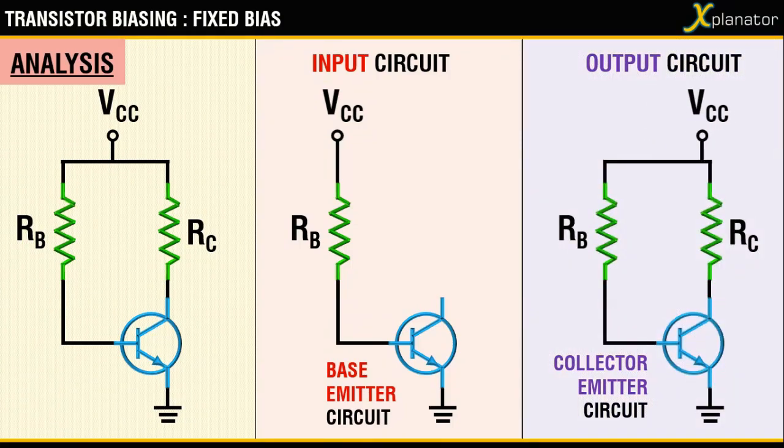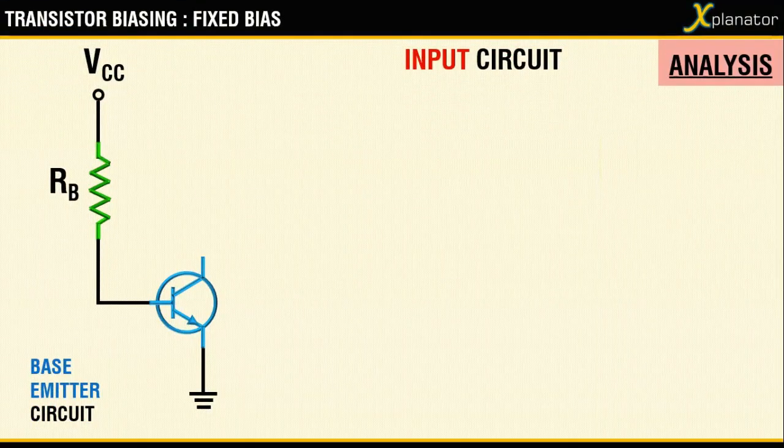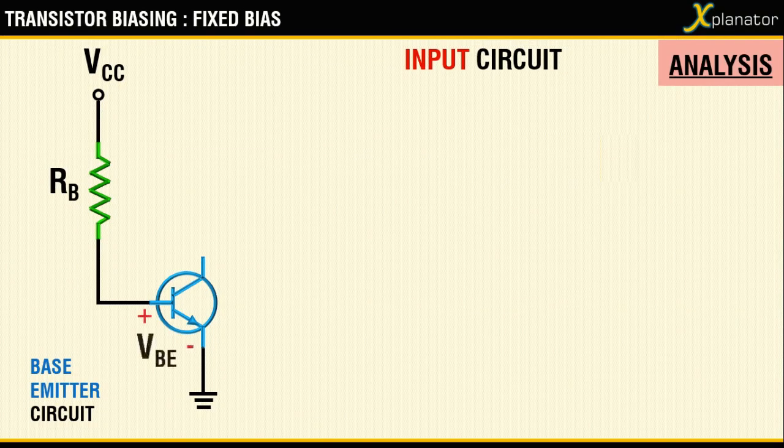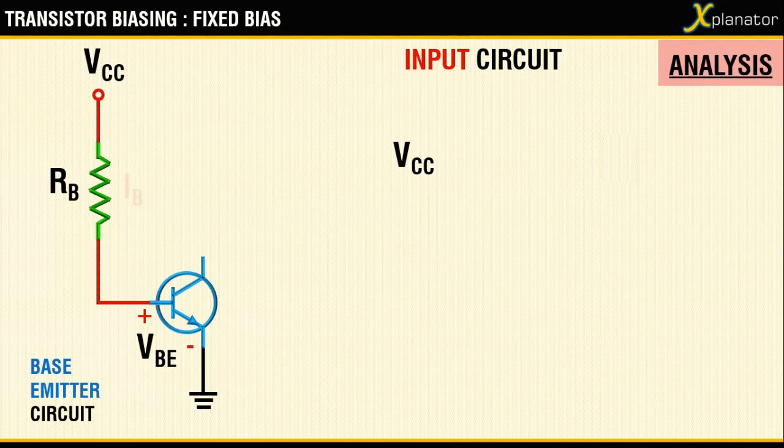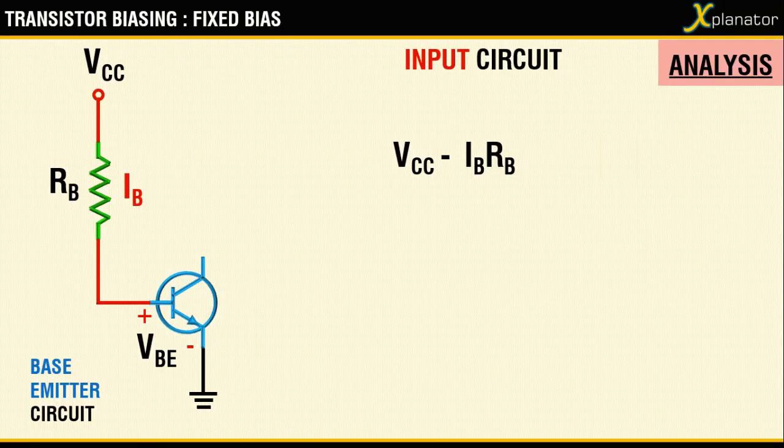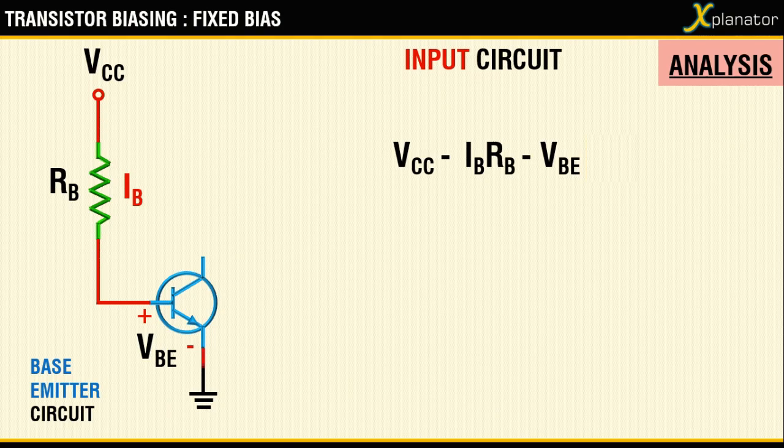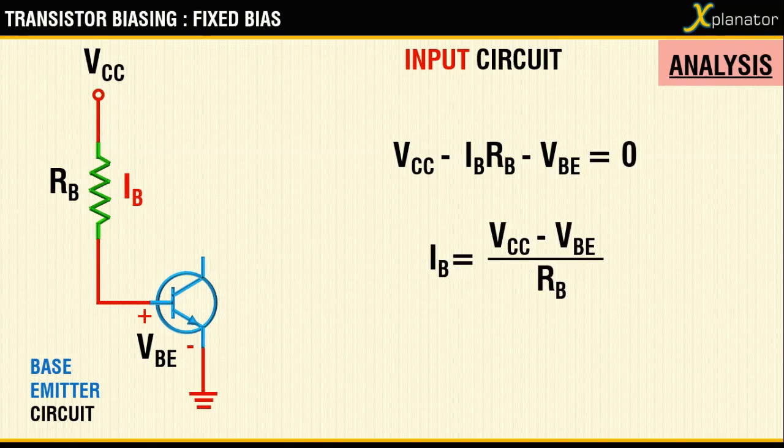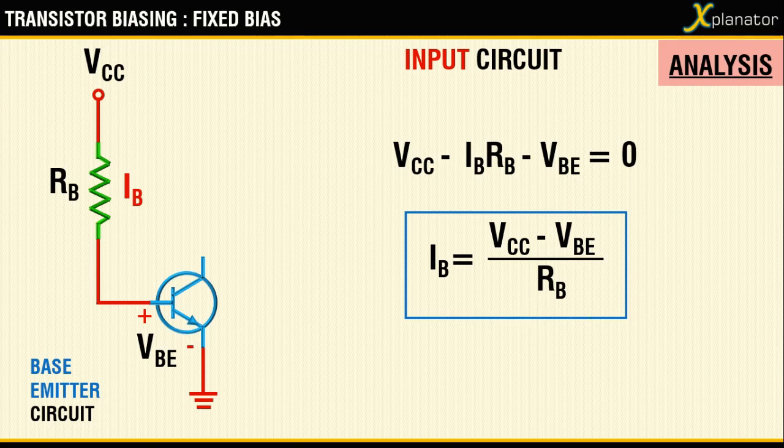Consider the input circuit. If you write a KVL equation for this circuit, you will have to first consider VCC. The current that flows in the base resistor RB is going to be IB. That will create a voltage drop of IB·RB, and the voltage drop which appears across base-emitter is given as VBE. Equate the equation to zero. Rearranging the terms, you will get the value for base current as (VCC - VBE) upon RB, and that is the expression for the first unknown parameter, that is IB.